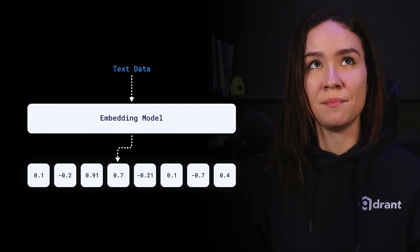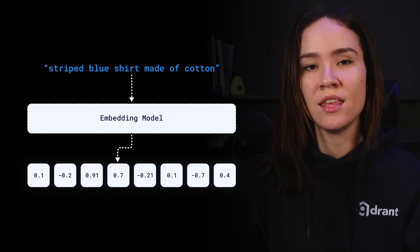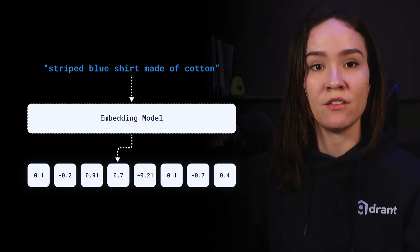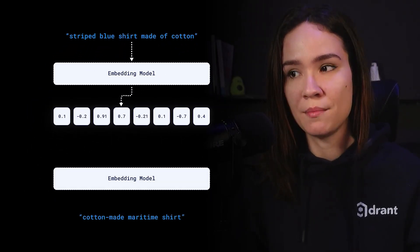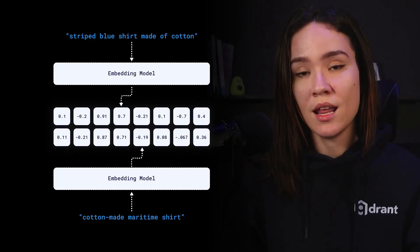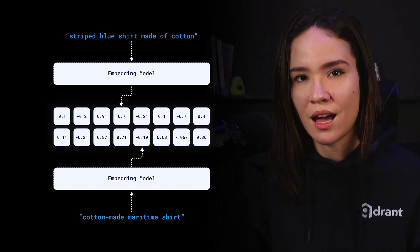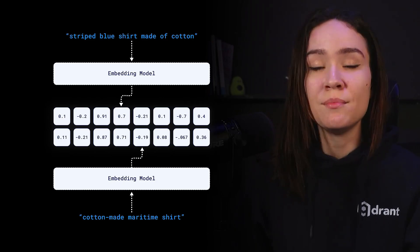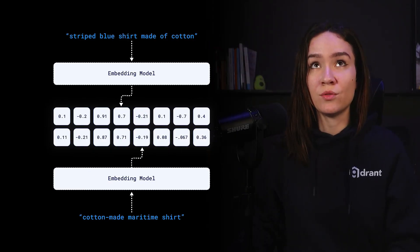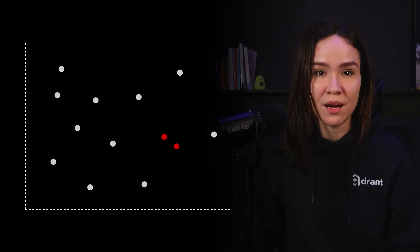Let's say I have the sentence 'striped blue shirt made of cotton.' I pass that through an embedding model, and the model gives back the embedding of that sentence. Then I pass through that same embedding model a similar sentence — 'cotton made maritime shirt.' Those two sentences are not the same, but they have a similar meaning. So if I pass the second sentence through the same embedding model, it will generate a similar embedding to my first one. That means those two sentences will be placed closely within the vector space, which also means they have a similar relationship between words captured by my embedding model.